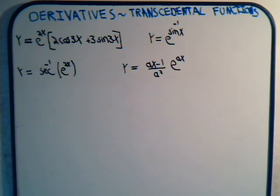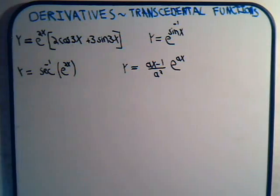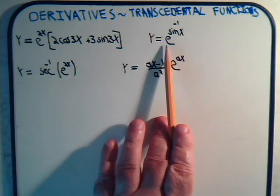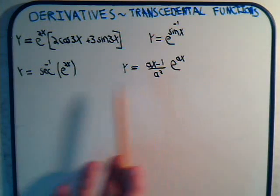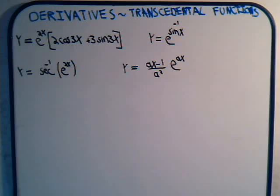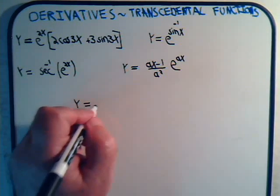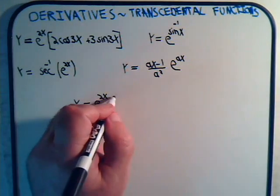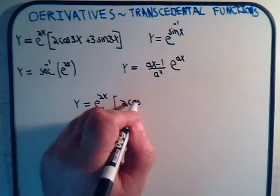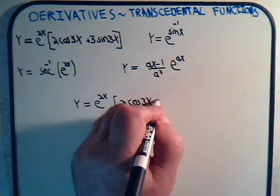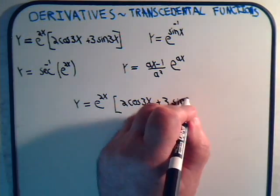In this video and the next video we're going to consider taking derivatives of transcendental functions. We have four problems here — we don't think we can complete all of them in one video, so we're going to take the first two here and then in the next video we'll do the other two. For the first problem we have y equals e to the 2x times the quantity 2 times the cosine of 3x plus 3 times the sine of 3x.